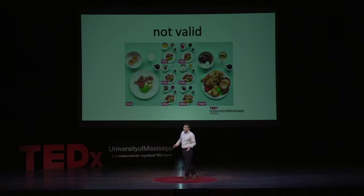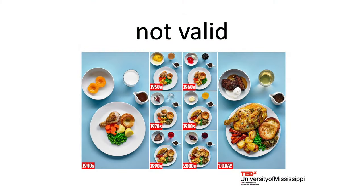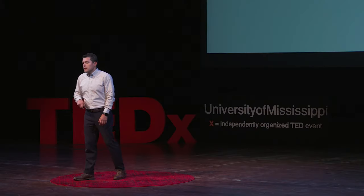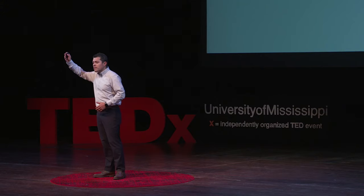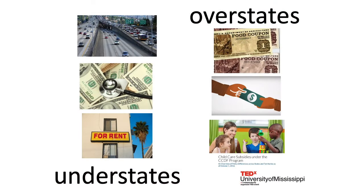Some authors have stated that this measure lacks validity in contemporary times because food is a lot cheaper than it used to be, but other necessities cost more, like transportation, childcare, or healthcare. This measure overstates poverty by ignoring benefits such as food stamps, subsidized housing, and childcare. It also understates poverty by ignoring expenses such as transportation, healthcare, and rent, which take a huge bite out of family budgets.